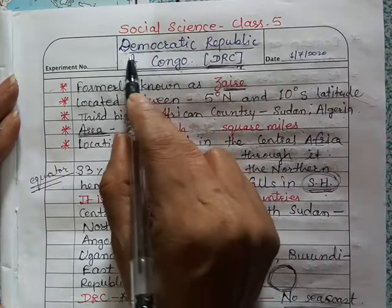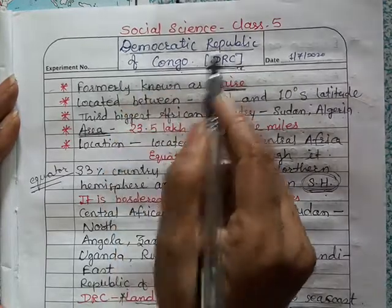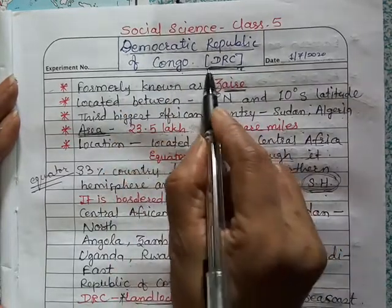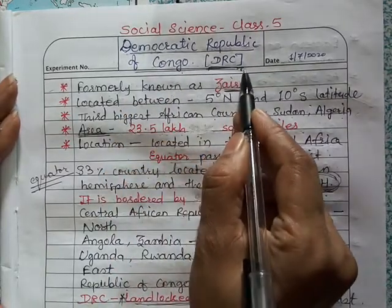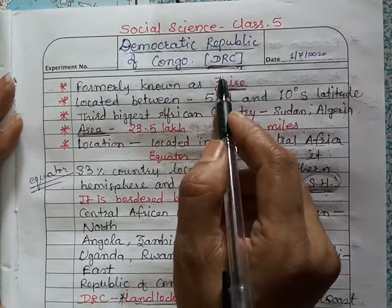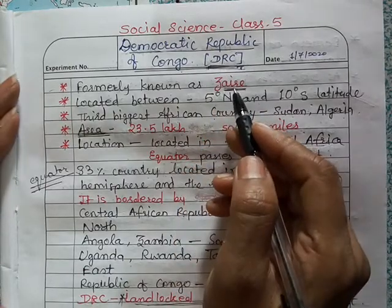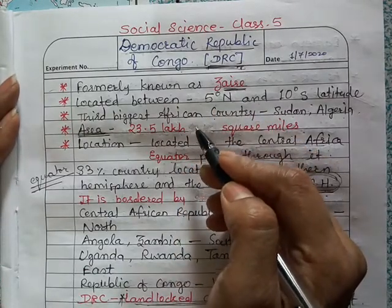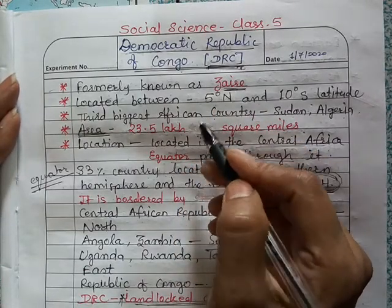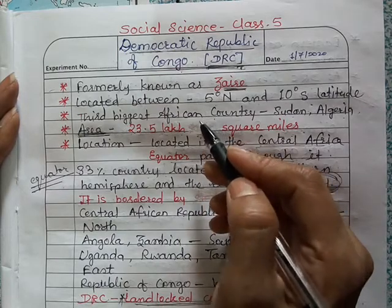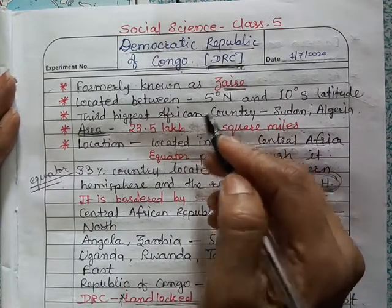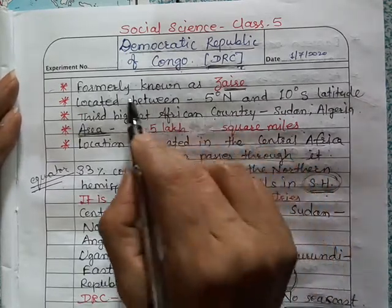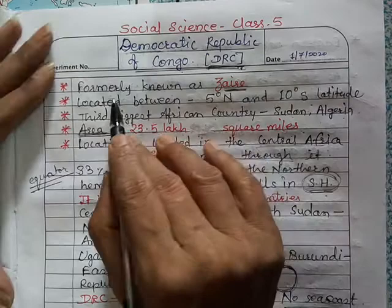Today's topic is Democratic Republic of Congo, or DRC. We are going to read about this country — what is its location, what is its climate, and what are the physical features of this country.